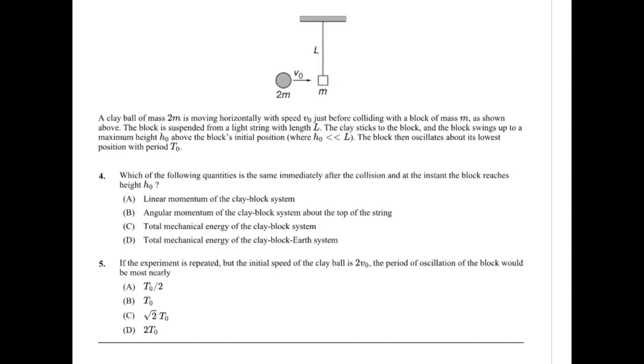Alright. Question four, or which would probably be the thing above it. So a clay block of mass 2m is moving horizontally with speed v0 just before colliding with the block of mass m as shown above. It's suspended and it swings to maximum height H0 from the initial position and H0 is greater than L and the block oscillates about its lowest position. Which of the following quantities is the same immediately after the collision and at the instant the block reaches the new height?